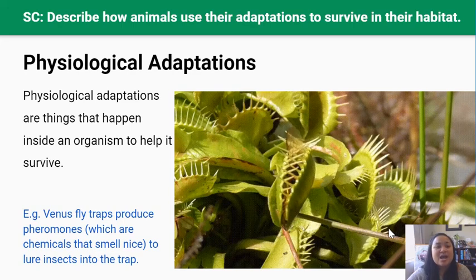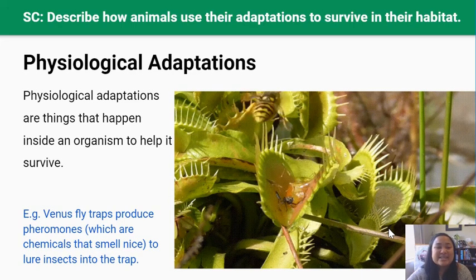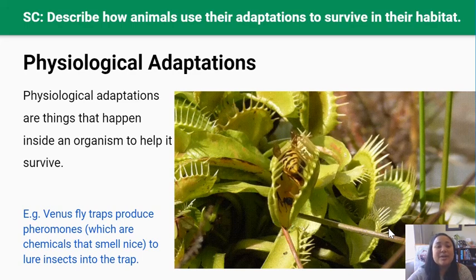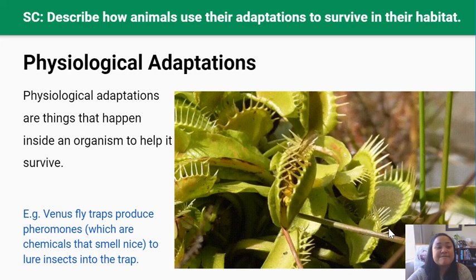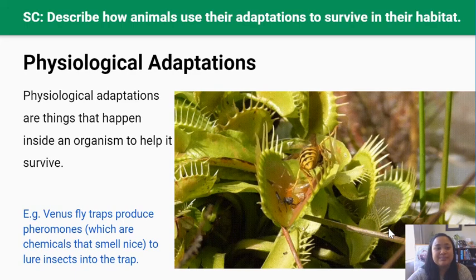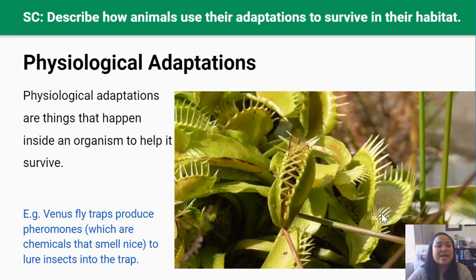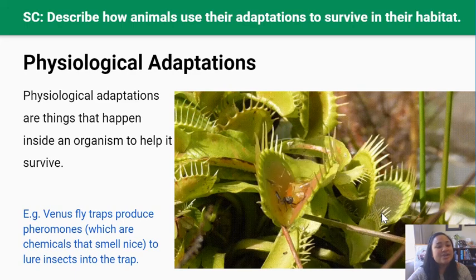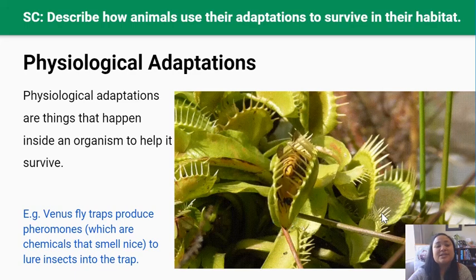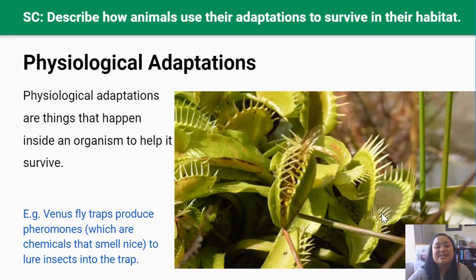Physiological adaptations are things that happen inside the organism to help it survive. For example, Venus fly traps produce pheromones, which are chemicals that smell nice to some organisms — usually insects — to lure those insects into the trap. Another physiological adaptation is that Venus fly traps produce digestive juices which break down the insect once it's been trapped into something the Venus fly trap can absorb. Yum!